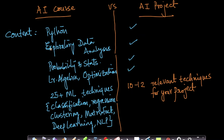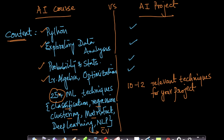From a content perspective, the AI course includes Python, exploratory data analysis, probability and statistics, linear algebra, optimization, and 25-plus machine learning techniques covering a wide spectrum: classification, regression, clustering, matrix factorization, deep learning, natural language processing, and computer vision. These 25-plus techniques cover the most used methods in industry.